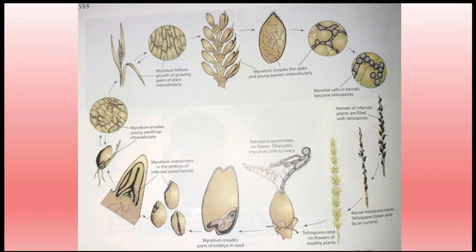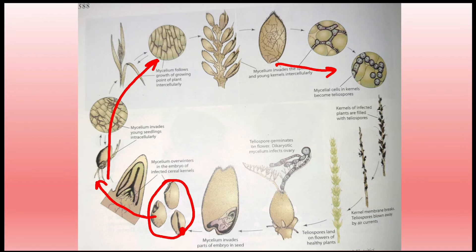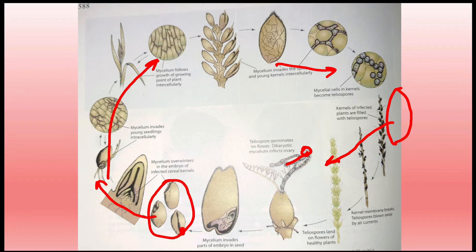Summary of loose smut disease cycle: Fungus survives as mycelium in embryo → infected seed germinates → pathogen grows with seedling → reaches spikelet → meiosis occurs → black powdery mass forms in place of grain → white papery membrane ruptures → spores spread by wind → land on flower stigma → form dikaryotic mycelium → infect ovary → mycelium present in embryo → cycle repeats. No secondary infection cycle occurs.